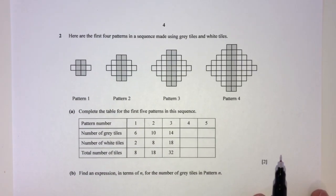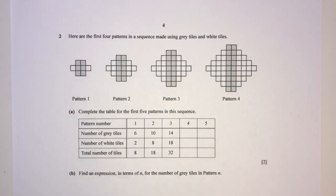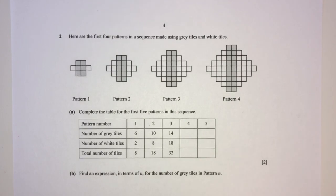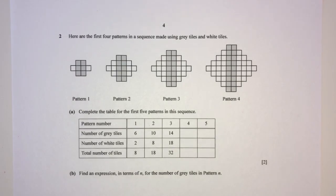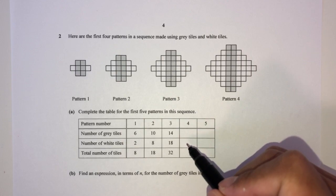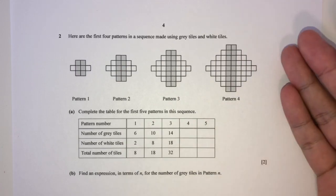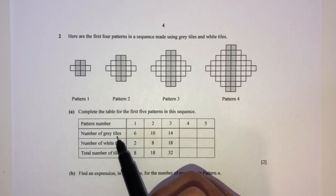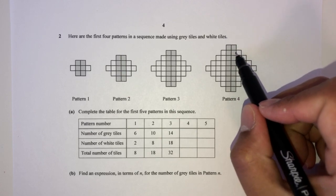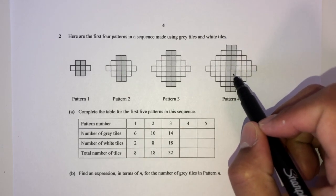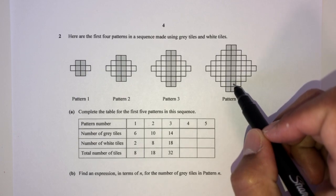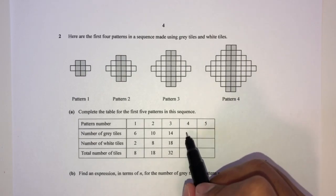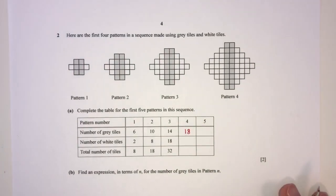Now let's move on to question number two. Here are the first four patterns in a sequence made using gray tiles and white tiles. For pattern number four, let's complete the table by observation. Counting the gray tiles: 1, 2, 3, 4, 5, 6, 7, 8, 9, 10, 11, 12, 13, 14, 15, 16, 17, 18. So we have 18 gray tiles.